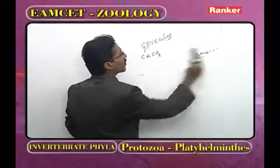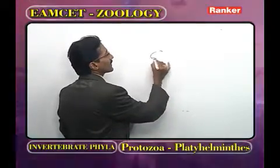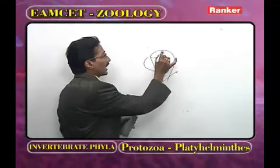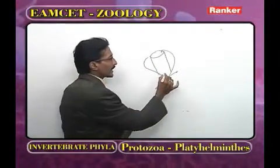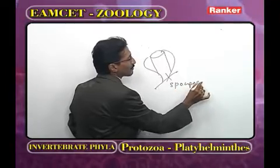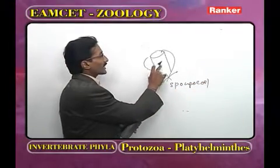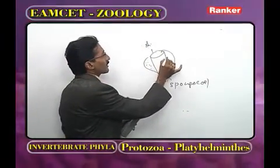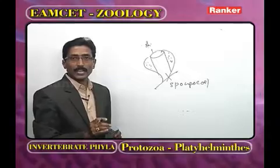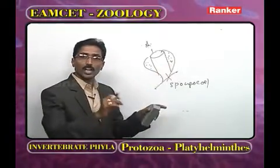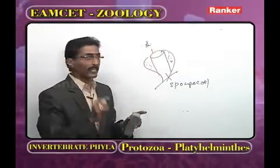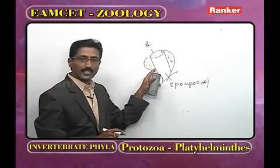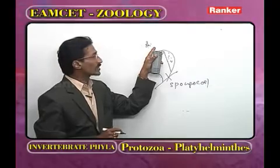In the body of a Poriferan, a longitudinal body cavity called the spongocoel is present. The spongocoel opens out through the osculum. On the body surface are minute pores called ostia. Materials enter the body through ostia, and all materials come out through the osculum.